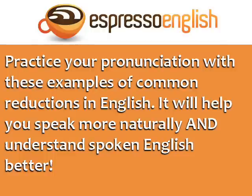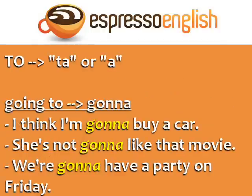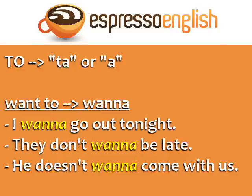Let's begin. The word 'to' becomes 'ta' or 'uh': 'I think I'm gonna buy a car.' 'She's not gonna like that movie.' 'We're gonna have a party on Friday.' 'Want to' becomes 'wanna': 'I want to go out tonight.'